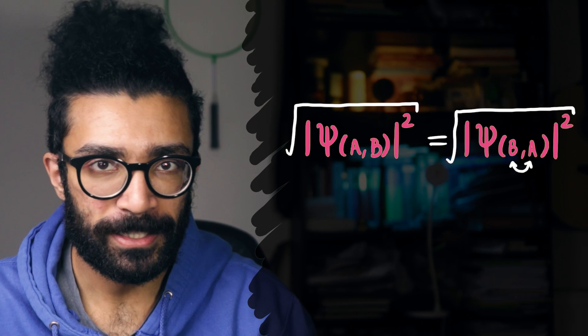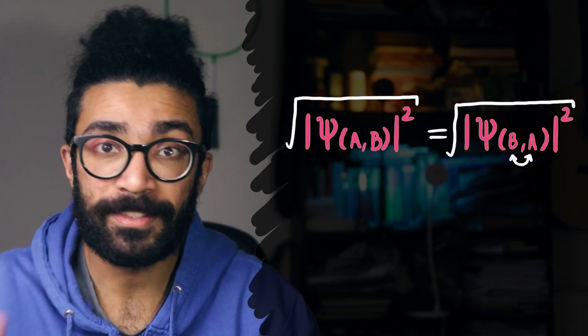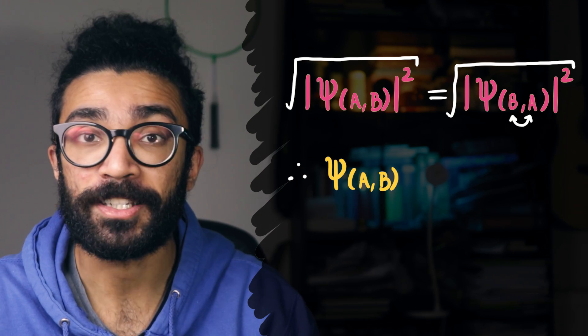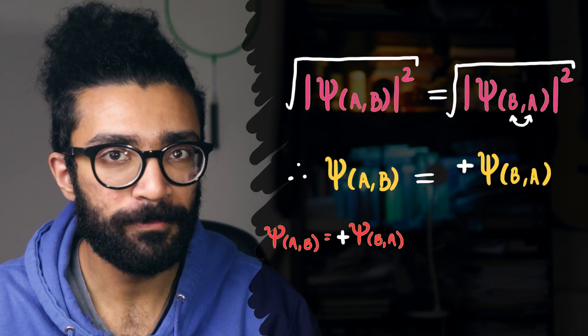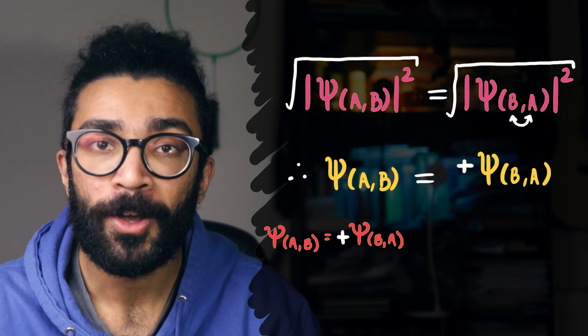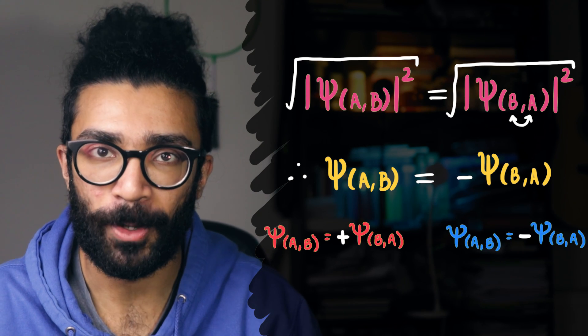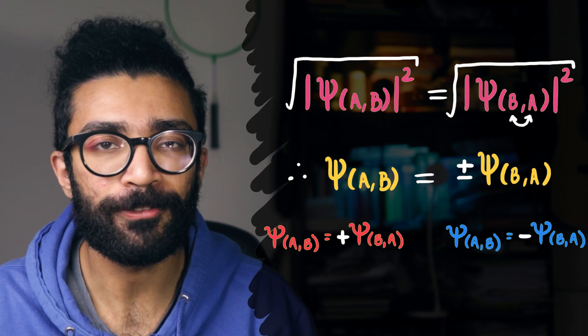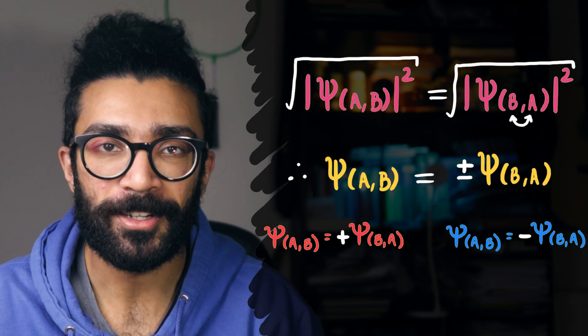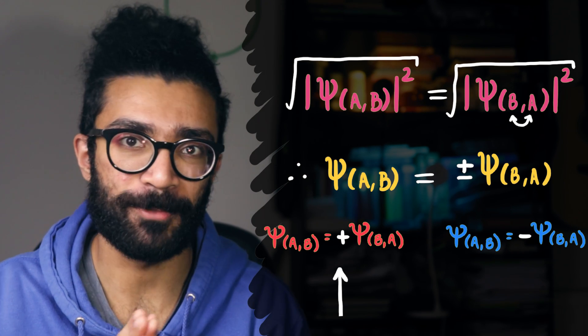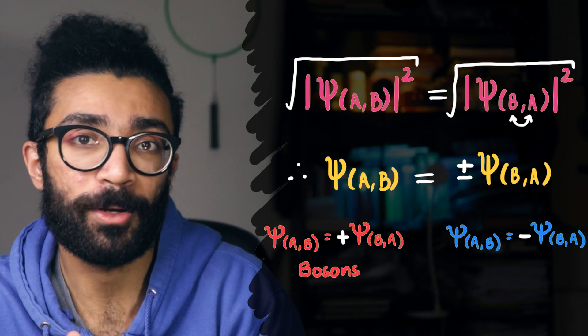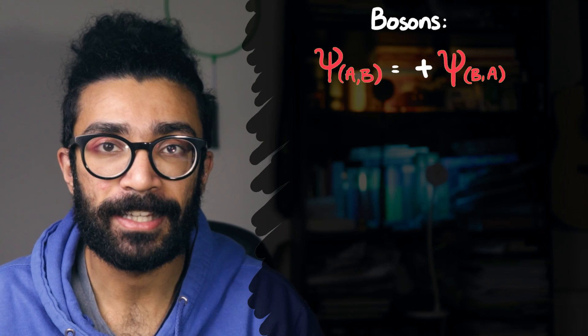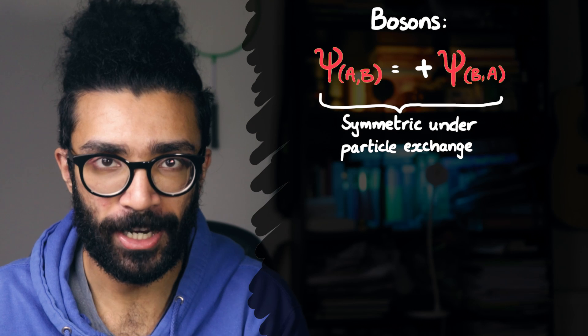If we then take the square root of this mathematical expression, then what we find is that the wave function itself for when we've got the particles in the orientation AB must either be exactly equal to the wave function of the orientation BA, or it must be equal to minus the wave function of the orientation BA. And so what we've done here is discovered the wave functions for two different classes of particle. The particles for which the wave function behaves like this are known as bosons, and the particles for which the wave function behaves like this are known as fermions.